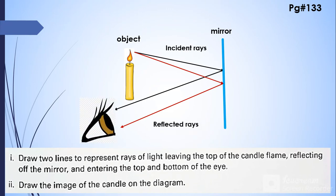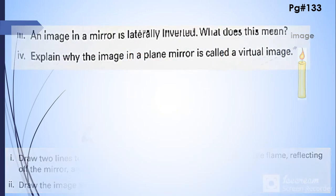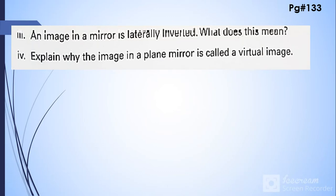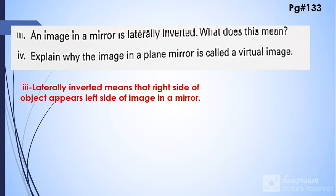Draw the image of the candle on the diagram. So this is the image of the candle on the diagram. Come towards the third part. An image in a mirror is laterally inverted, what does this mean? So this means that your left side will become right and your right side will become left.